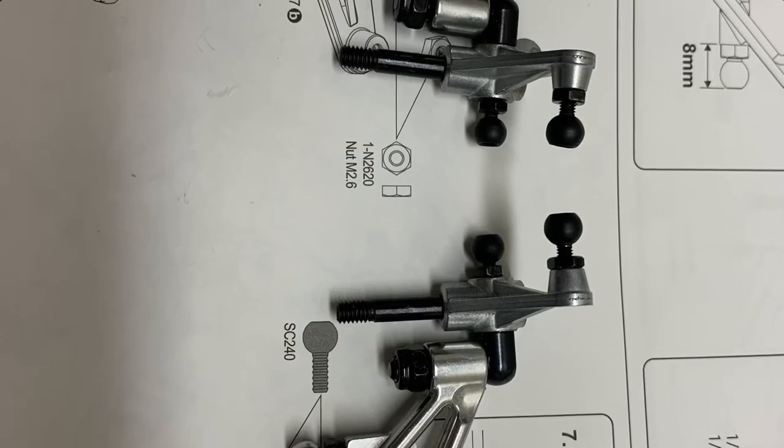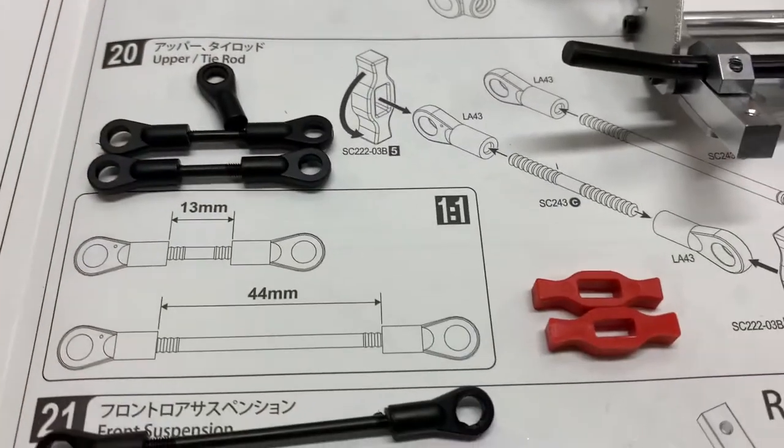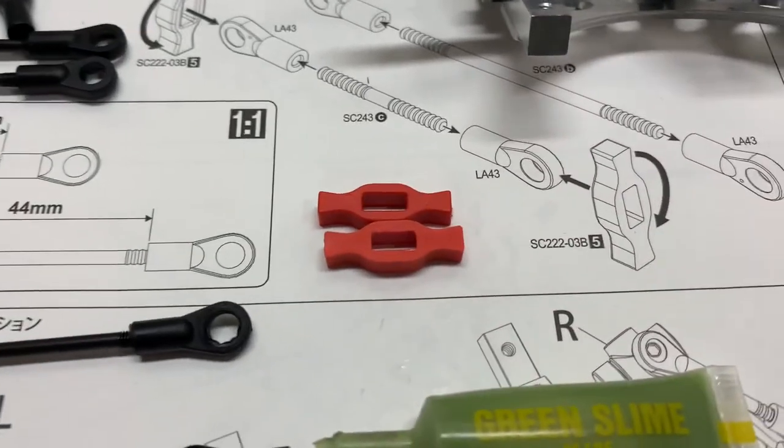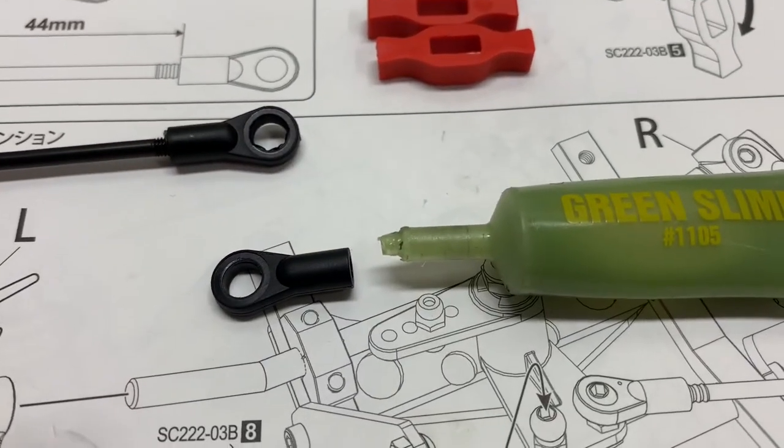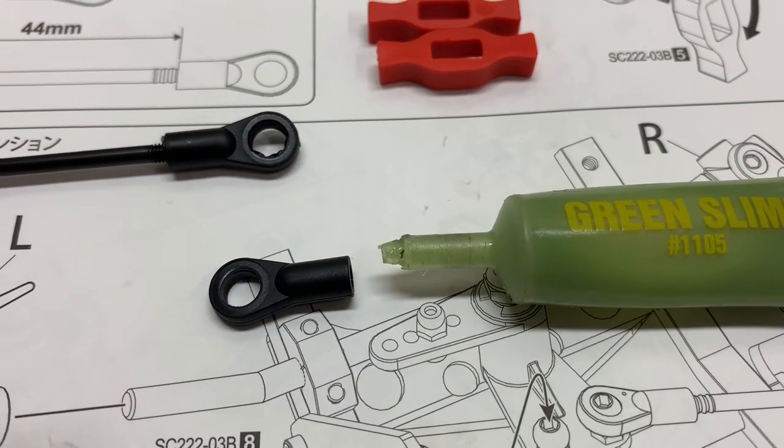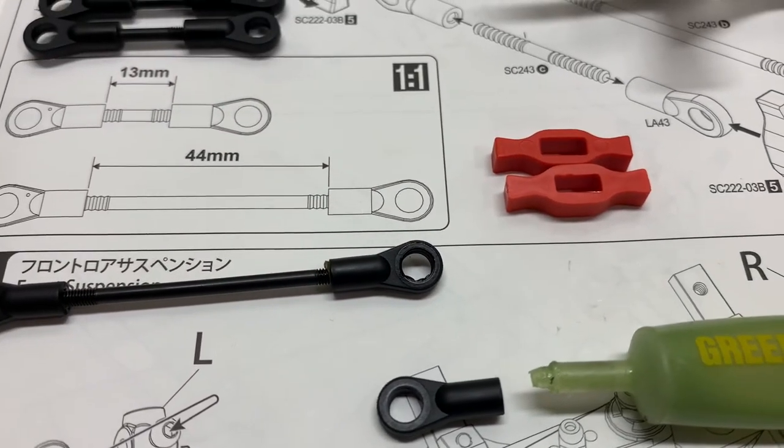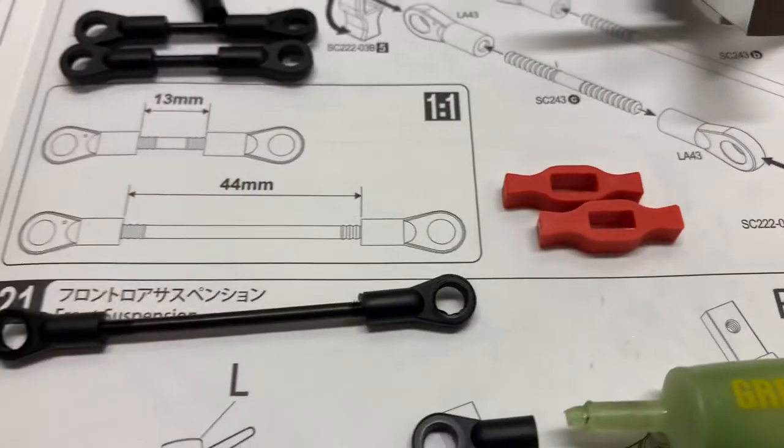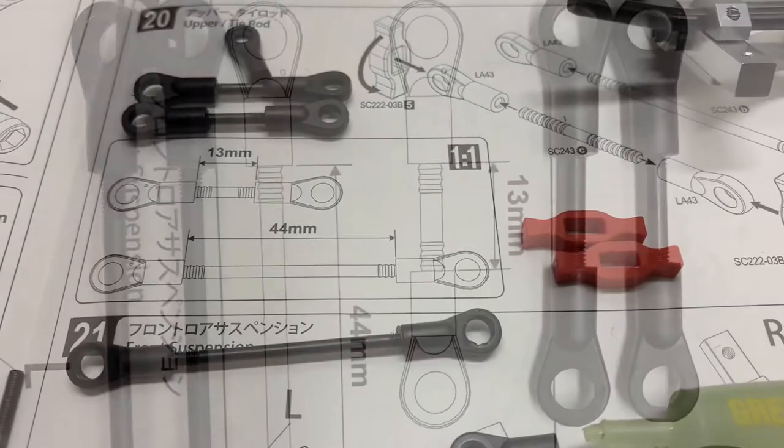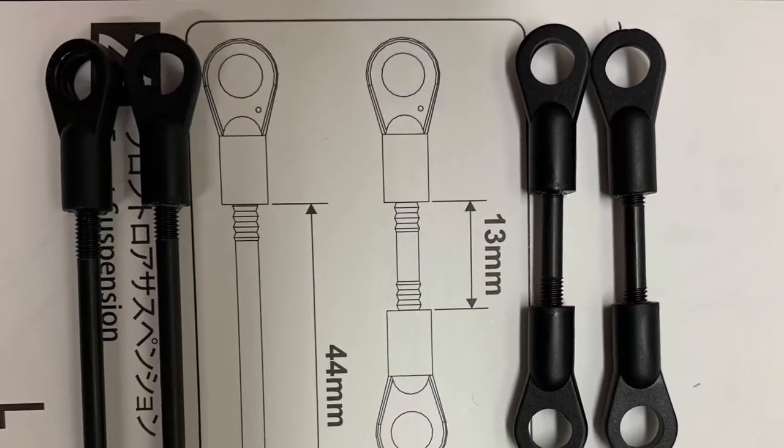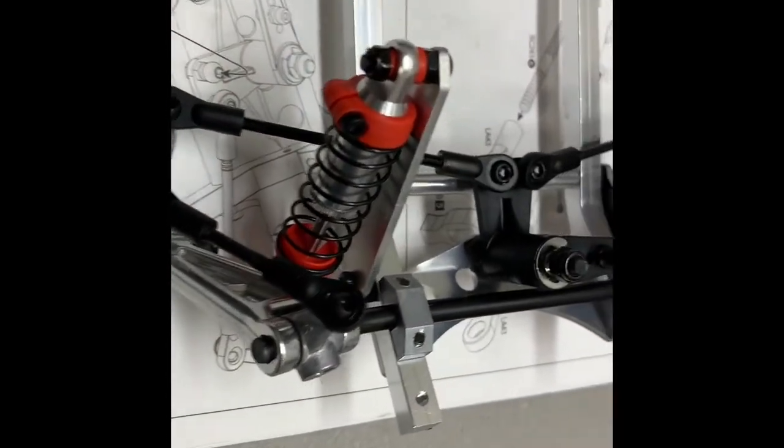So I'm building the turnbuckles now for the front end. Kyosho gives you these two little turners here for the turnbuckles, but I prefer just putting a little bit of this green slime right into the end of the turnbuckle eyelet. And they're really not too hard to turn. So I actually haven't used these at all. I've just been turning them and they turn pretty easily. So no big deal. Almost done with these.